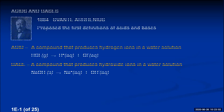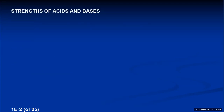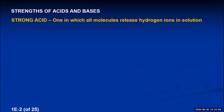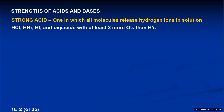Acids and bases can have varying strengths. We consider an acid strong if all the molecules release hydrogen ions in solution. If you take something like HCl, HBr, or HI — if you put a hundred HCl molecules in water, every single one of them will be ripped apart into hydrogen ions and chloride ions. Because that happens 100% of the time, those are considered strong acids.